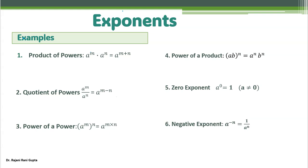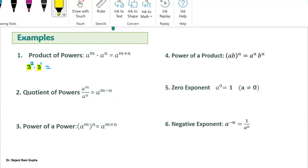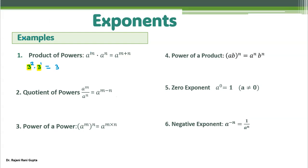Let's take an example for the product of powers rule. Suppose you have 3 power 2 times 3 — which means 3 power 1, since when a number is written without a power it's understood the power is 1. The base is the same, so we write the base once and add the powers: 2 plus 1 equals 3, giving 3 power 3. That is 3 times 3 times 3, which is 9 times 3, which is 27.